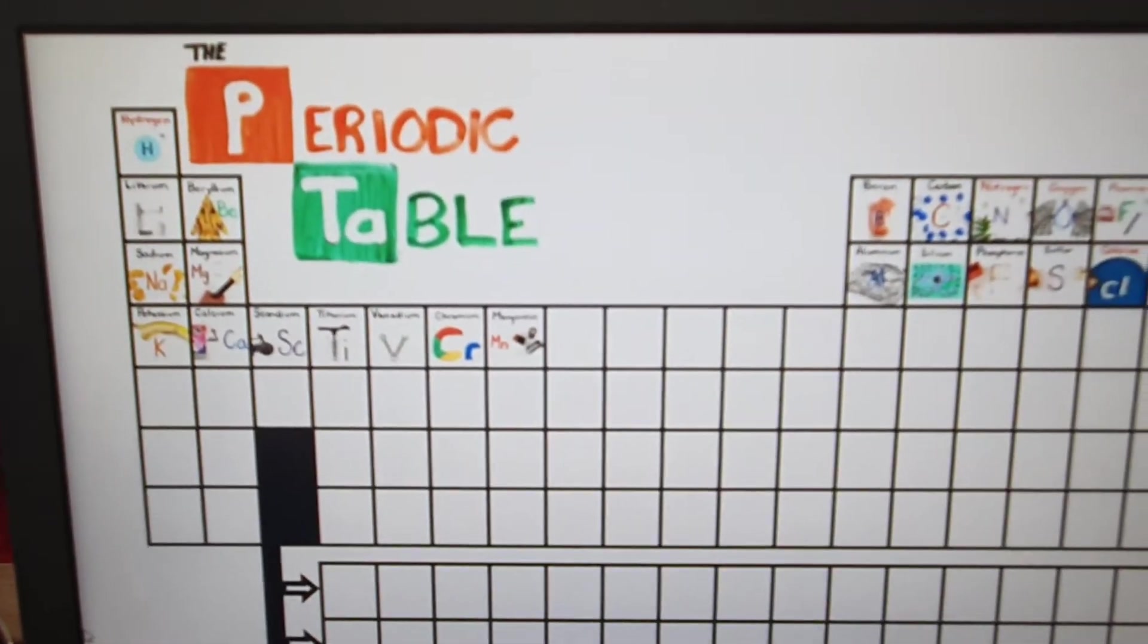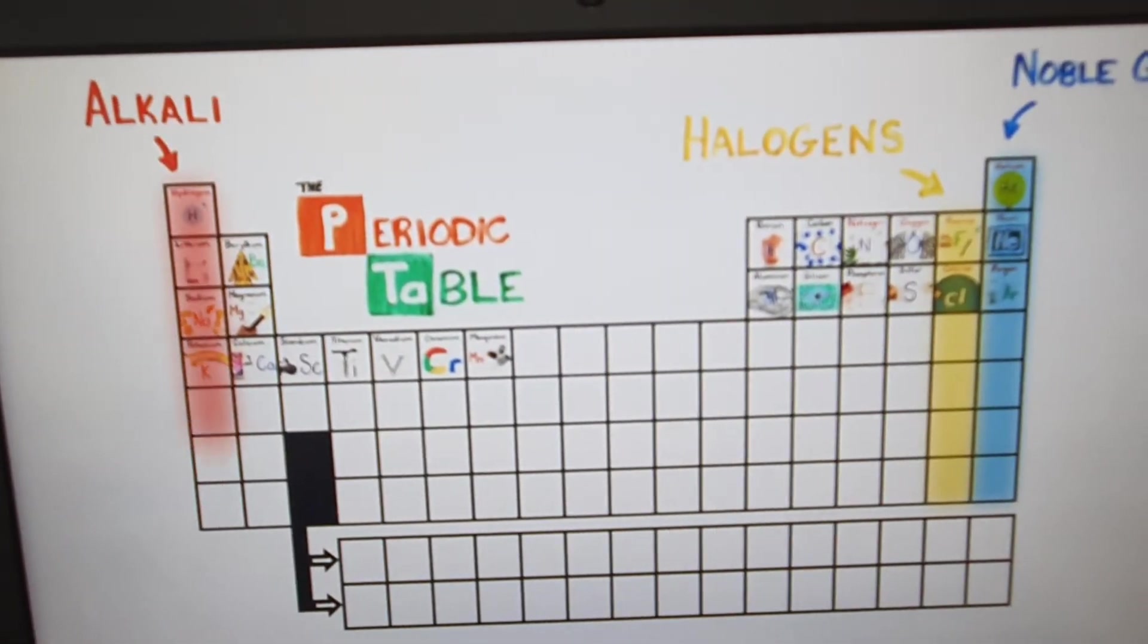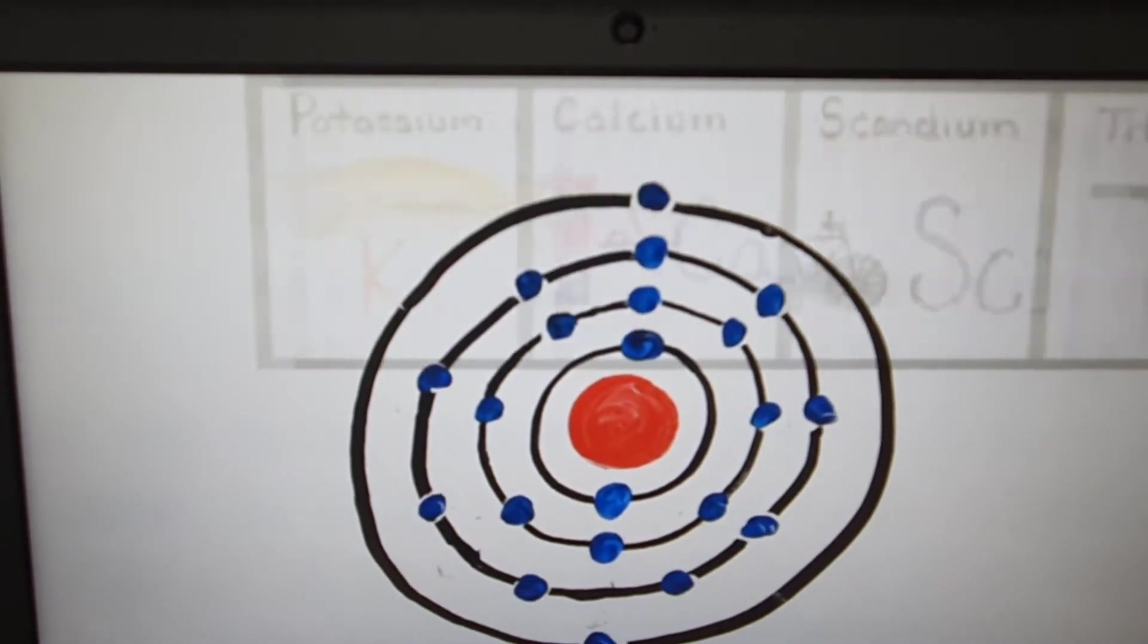This is the periodic table, noble gas table, halogens and alkali and cryptography. You see new average hours, now moving to the right.